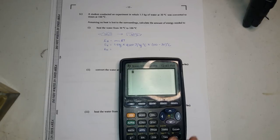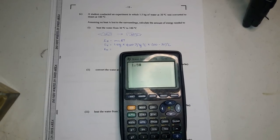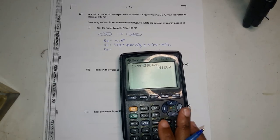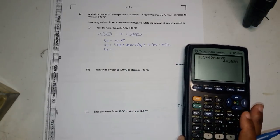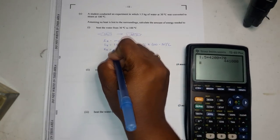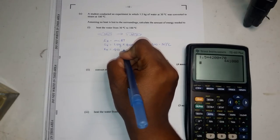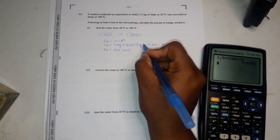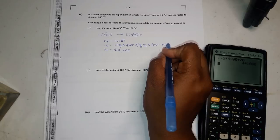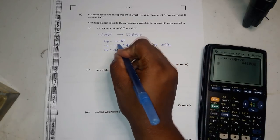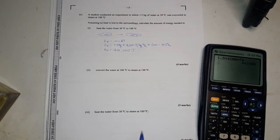So here we have 1.5 times 4200 times 70 and we got 441,000 joules.